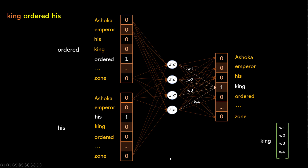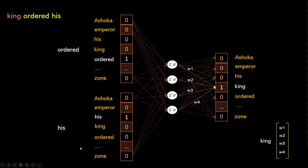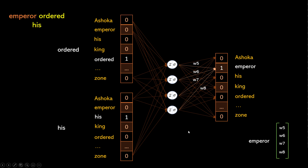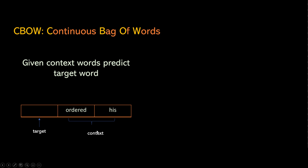At that point the word vector for king would be the weights w1, w2, w3, w4. Those weights are nothing but a trained word vector, and this vector will be very similar to the vector for emperor (w5, w6, w7, w8). Think about it — the input 'order' and 'his' is the same for both king and emperor, so when the input is the same you expect the weights will also be similar, and hence the vectors for king and emperor will be very similar. This approach is called Continuous Bag of Words (CBOW) — you have a context (order, his) and you predict the target (king).